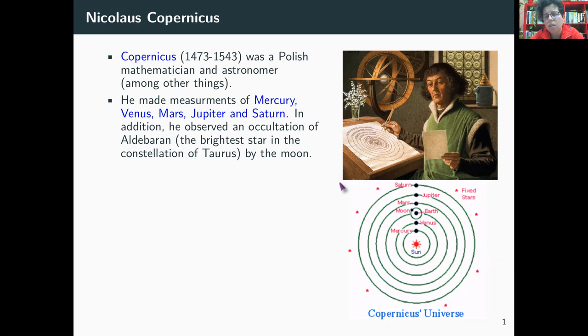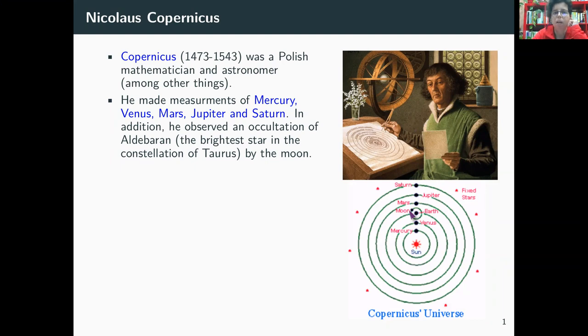What does occultation mean? Essentially, we are on the earth, we have the sun, and at some point we have the moon here, and the star is roughly here. What he observed is that because the moon was in between the line between the earth and Aldebaran, the moon was hiding it.